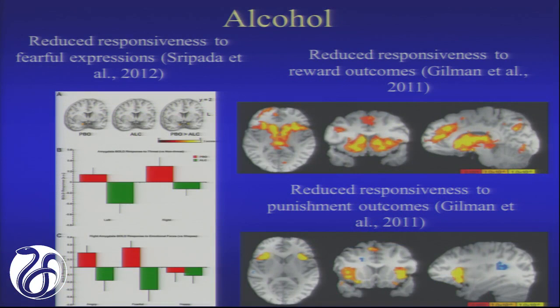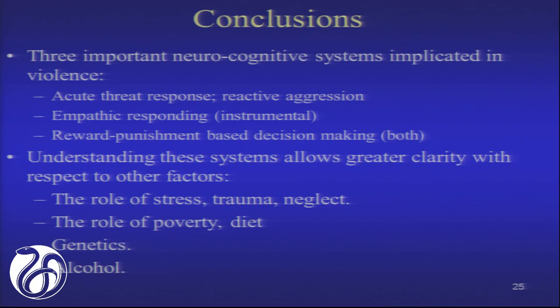I'll briefly mention alcohol since there's a whole session on it. Alcohol has a very interesting effect in healthy individuals of reducing your response to the distress of other individuals. It also disrupts punishment-based decision-making. Looking at the literature, it appears that alcohol induces something similar to the fundamental problems we see in the callous-unemotional group — producing a very unempathic, decision-making-impaired individual.